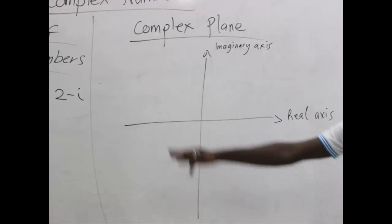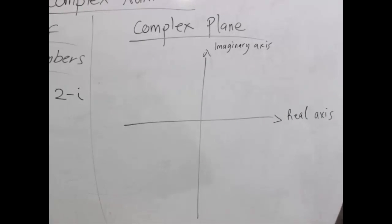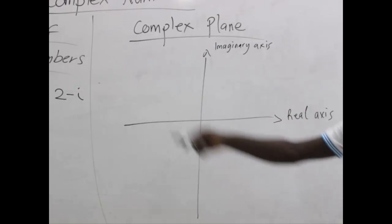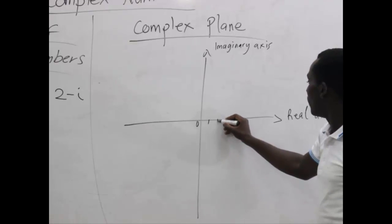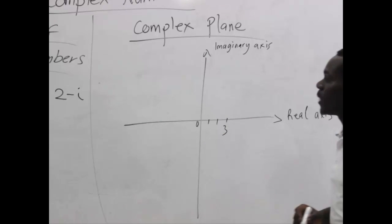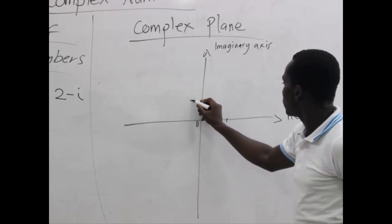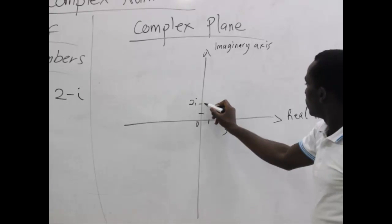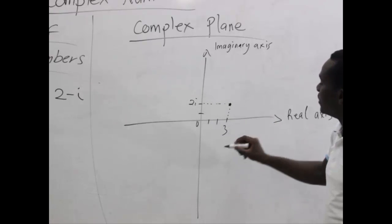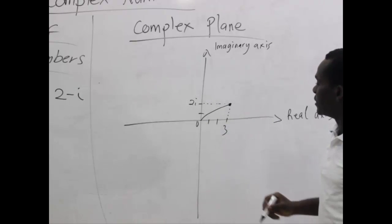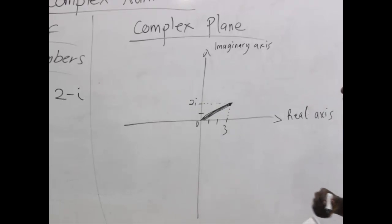Now let's plot z1 and z2 on the complex plane. For z1, we first locate the real aspect, which is 3. So we demarcate positive 3 on the real axis. The imaginary part is 2i, so we move 2 units along the imaginary axis. We then trace where these two parts meet and trace it back to the origin.